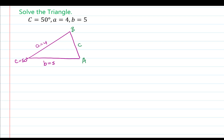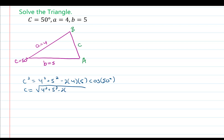We all need to start by finding side c. Since we're solving for a side, that's the unknown on the left side of the formula: c squared equals 4 squared plus 5 squared minus 2 times 4 times 5 times the cosine of the included angle, which is 50 degrees. Taking the square root of both sides, c equals the square root of 4 squared plus 5 squared minus 2 times 4 times 5 times cosine of 50 degrees. Type this into your calculator in degree mode — I get approximately 3.91 units.